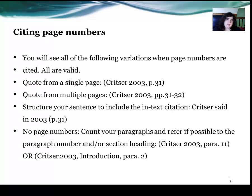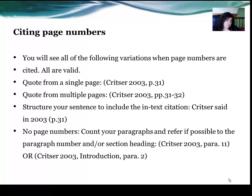Within the in-text citation, if you are quoting directly from an author on a particular page, you can say: Christer said in 2003 (p.31), and then whatever Christer says. But if there are no page numbers, you could count the number of paragraphs and refer to the paragraph number and/or section heading — for example, Christer, 2003, para.11, meaning the 11th paragraph in Christer's 2003 publication.